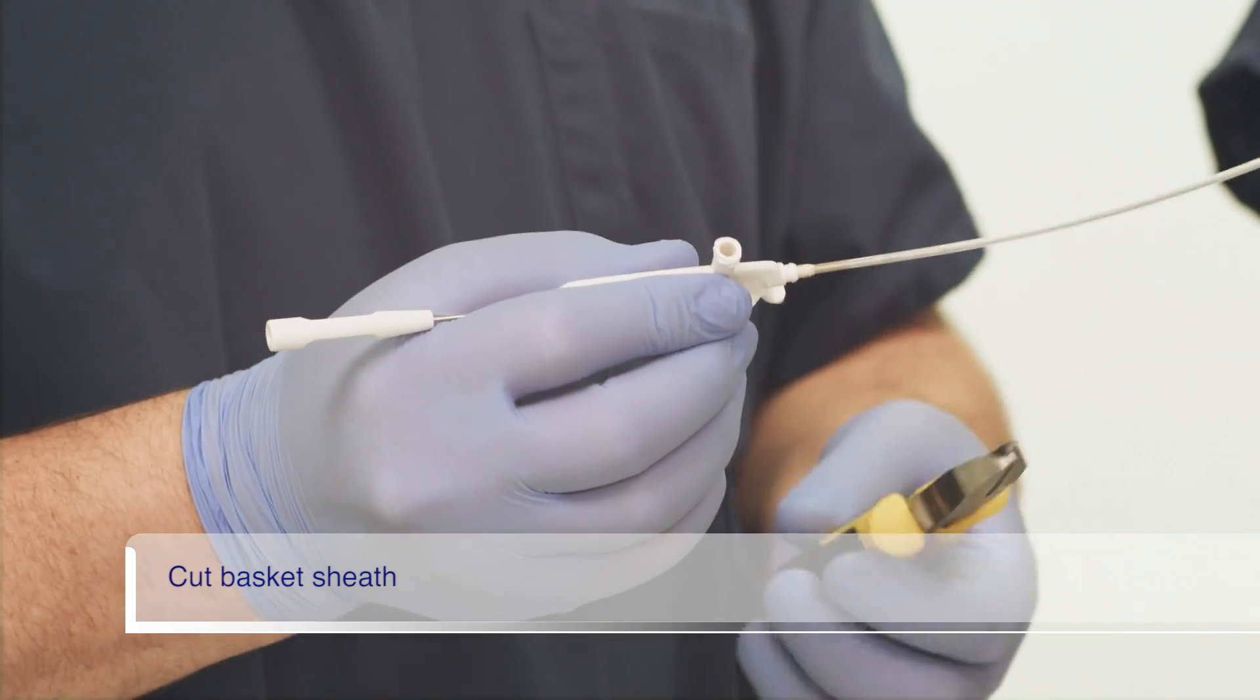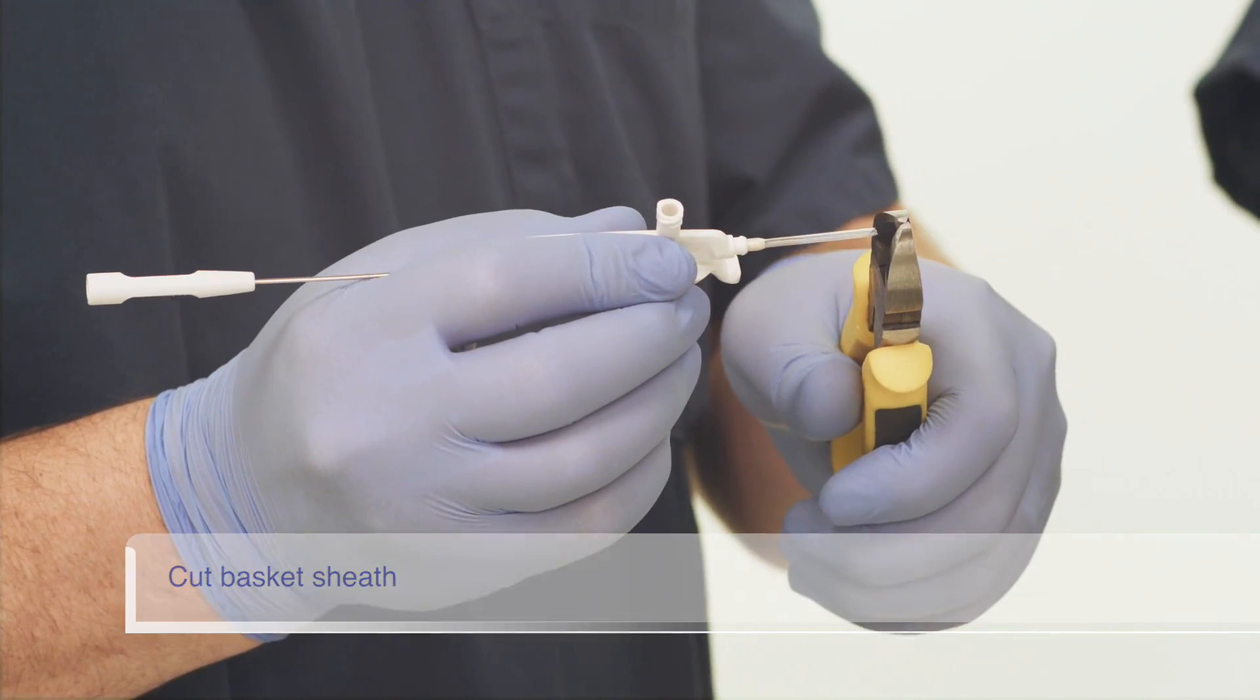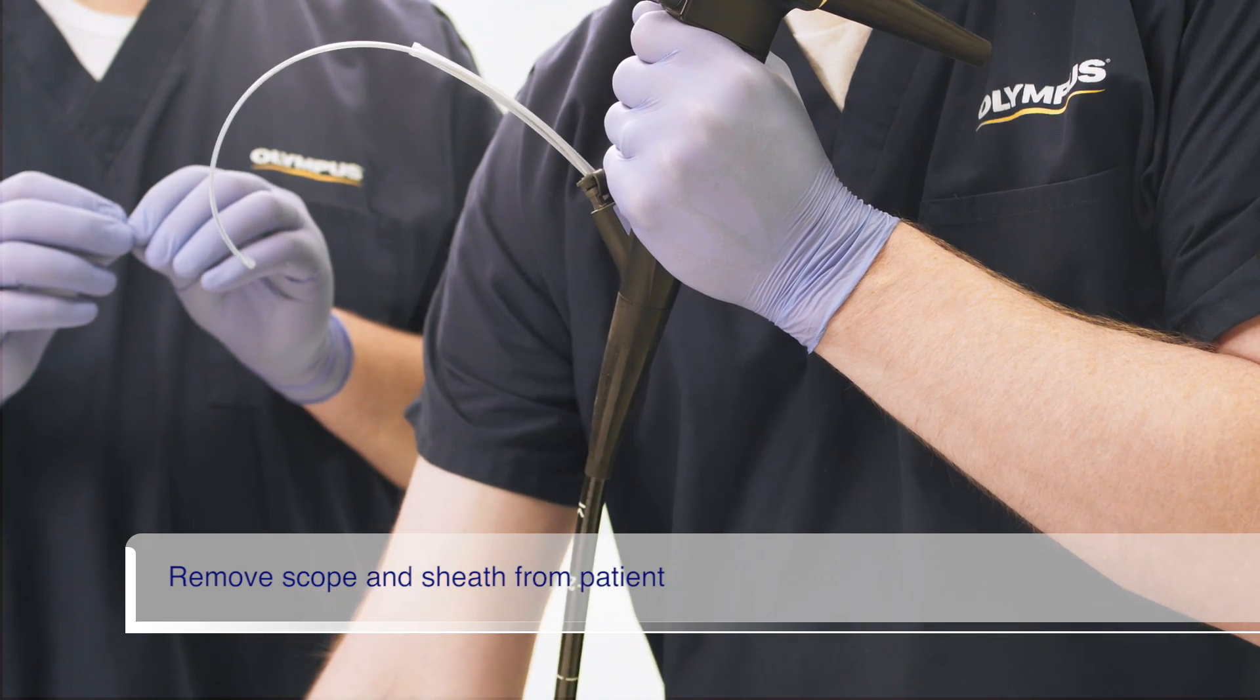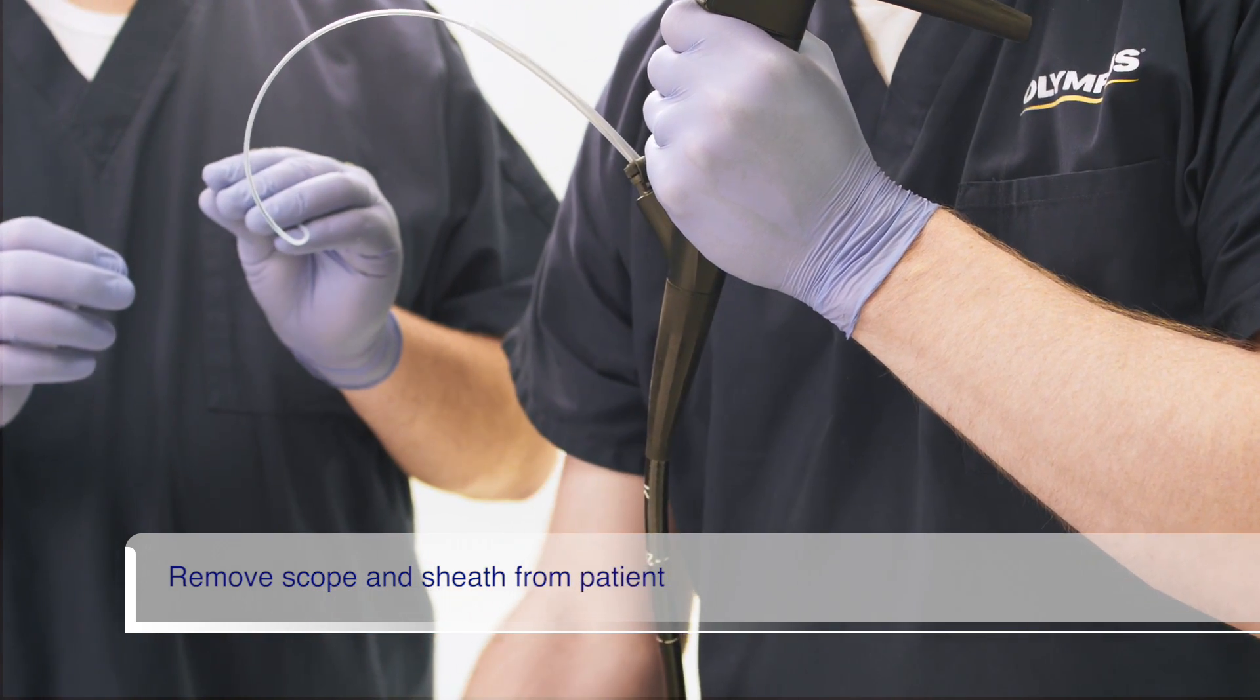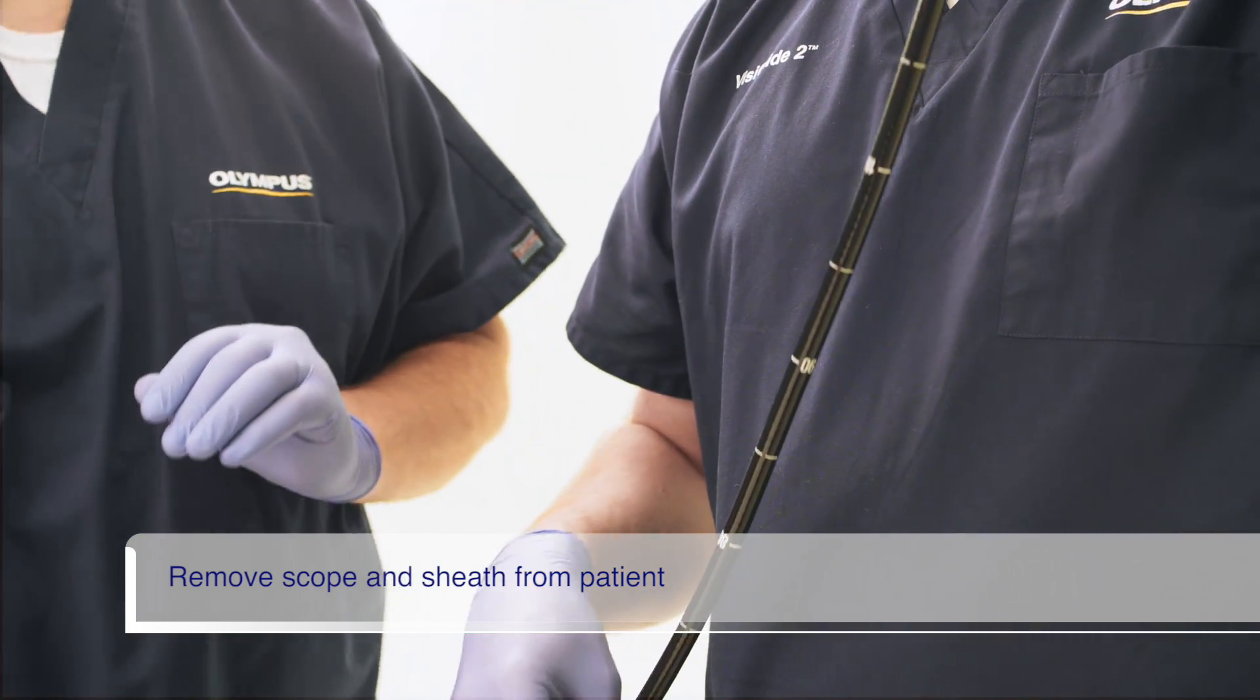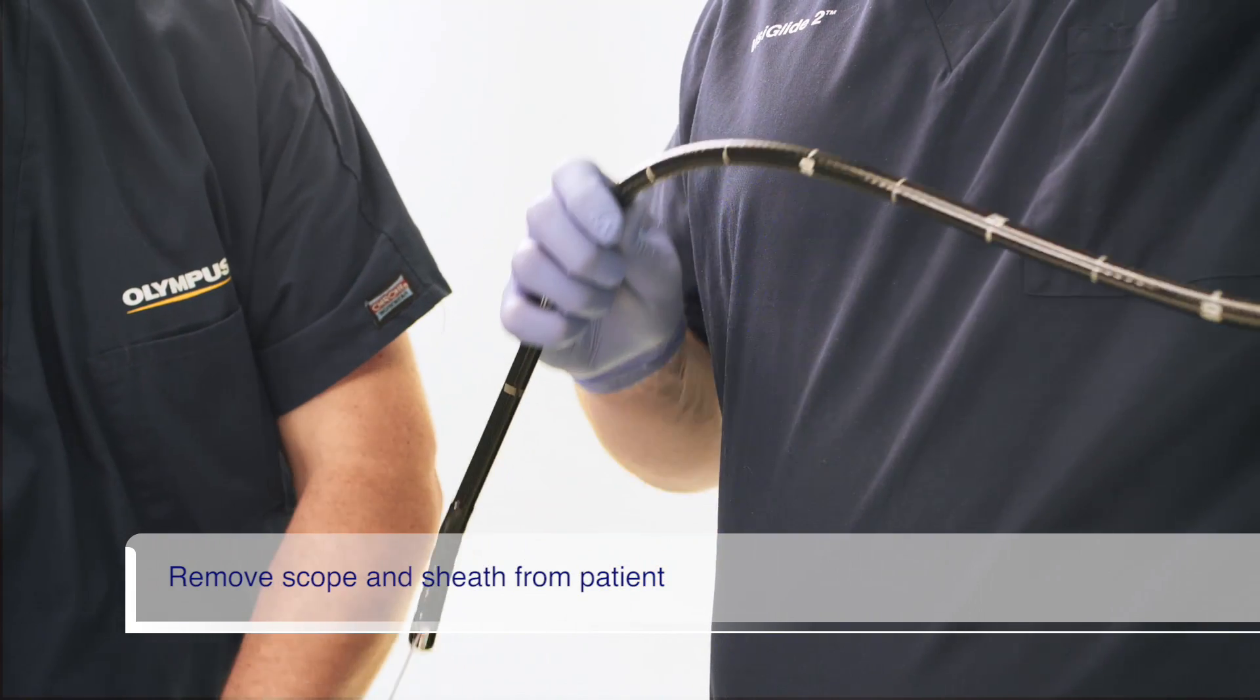Then, using the wire cutters, cut the sheath close to the handle. Now the sheath and scope need to be simultaneously removed from the patient. Do not remove the sheath prior to removing the scope, as this may cause damage to the scope working channel.